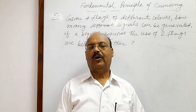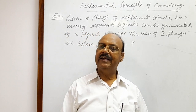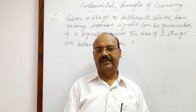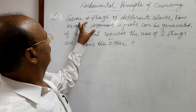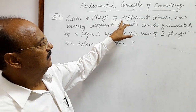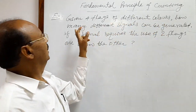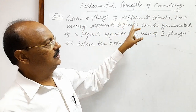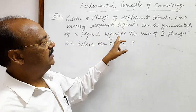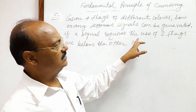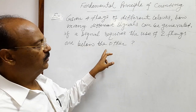Let us see a problem from the topic fundamental principle of counting. The question is very simple and very interesting. Given four flags of different colors, how many different signals can be generated if a signal requires the use of two flags, one below the other.